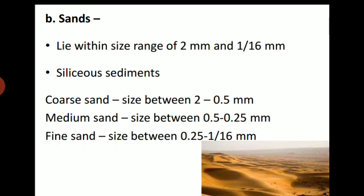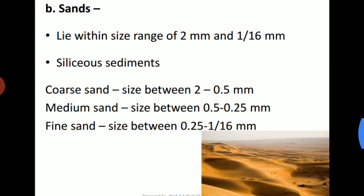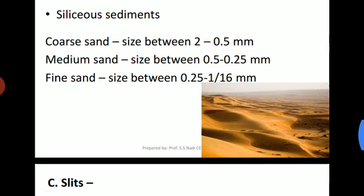The second type of clastic rock is sand. The size of sand lies between 2 mm and 1/16 mm. Sand is a siliceous sediment. Sand is also classified into three types according to size: coarse sand, size between 2 to 0.5 mm; medium sand, size between 0.5 to 0.25 mm; and fine sand, size between 0.25 to 1/16 mm.